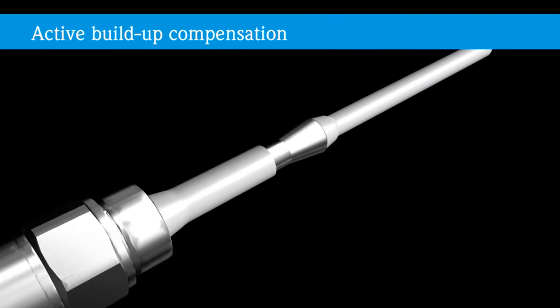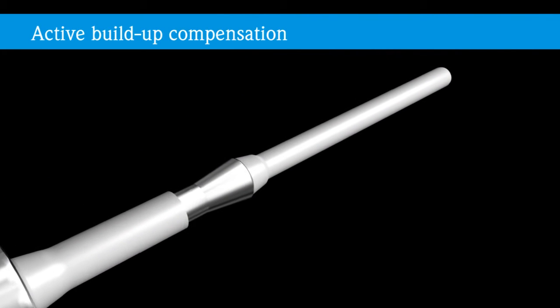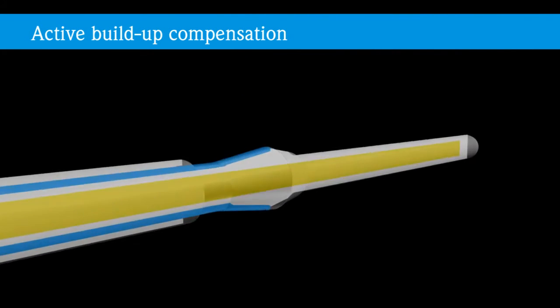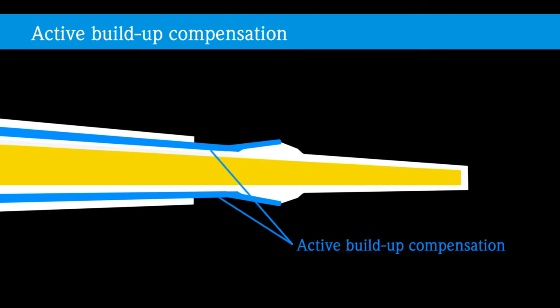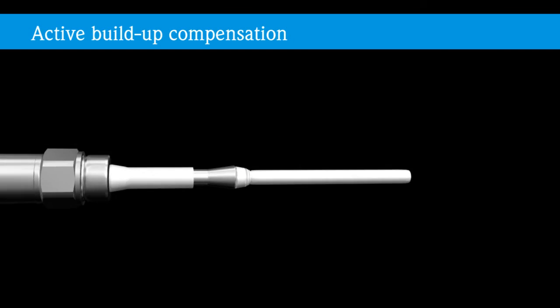Endress+Hauser has developed a capacitive probe with active build-up compensation. The probe has an additional protective electrode with the same potential as the measuring probe, which not only generates one electric field, but two identical fields.